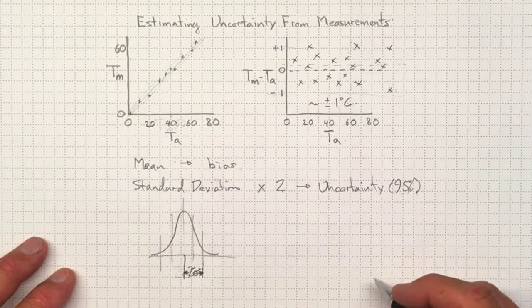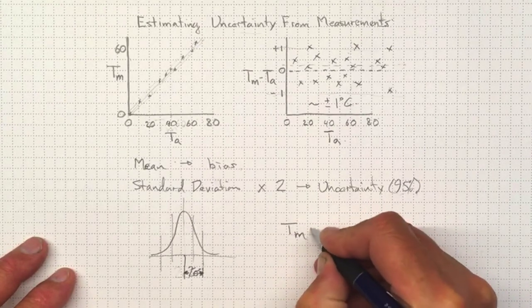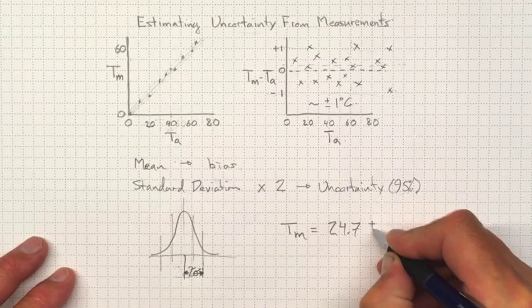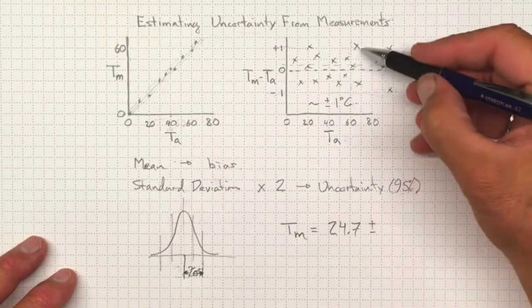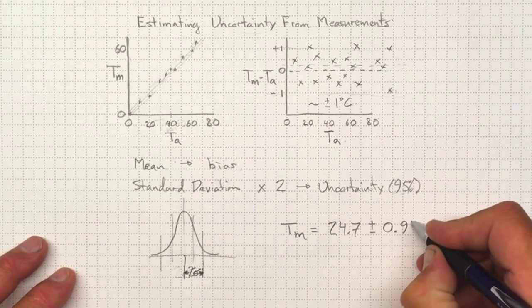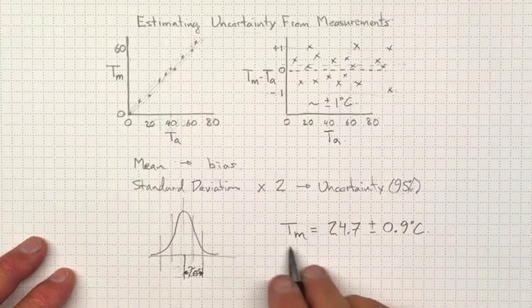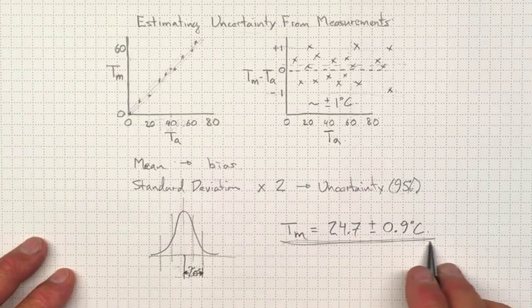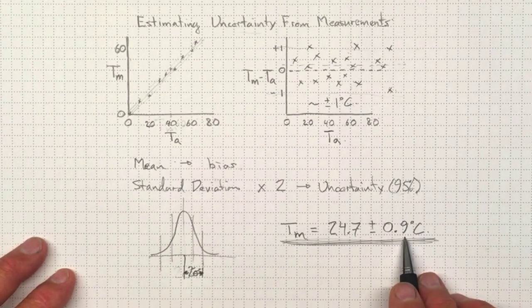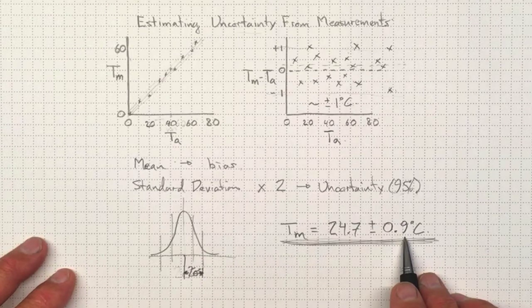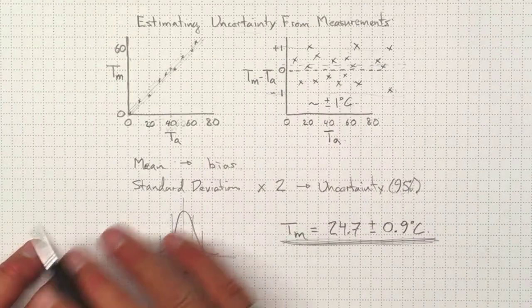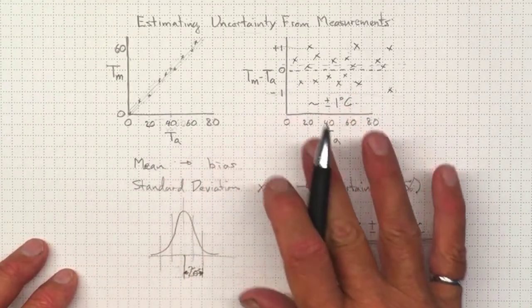So again, make sure that every measurement, say it's 24.7, includes a tolerance of, say, from this one, let's say we did our standard deviation calculation and we got 0.9 degrees Celsius. That information, both of those numbers, are really important to telling us not just what the temperature is, but how sure we are that the temperature is in that range. Again, these examples with temperature and degrees Celsius, it could apply to voltage. It could apply to pressure. It could apply to anything you measure. The approach will be the same.